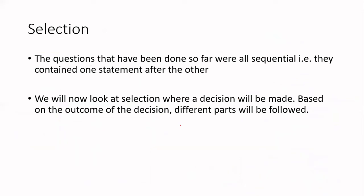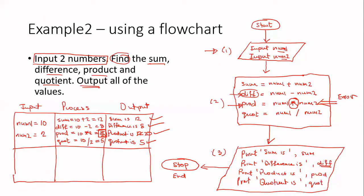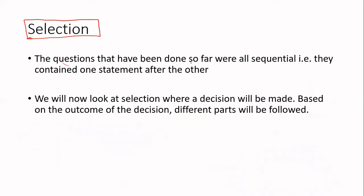Let us now look at how to work with selection using a flowchart. In our previous flowcharts, all our statements were sequential. If we look at the previous example that we did, all of these statements — there are four statements here — these are all sequential. Sequential means one after the other. So everything that we've done so far contained one statement after the other.